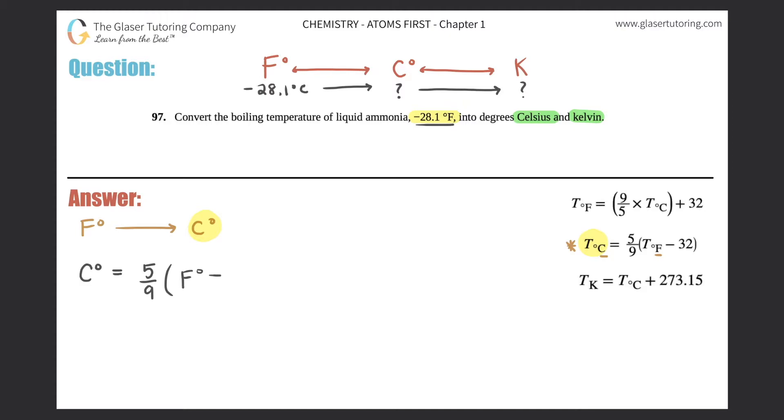Now remember your PEMDAS, right? Parentheses comes first, so you have to do this first, and then you will multiply by 5/9. That comes second. So Celsius = 5/9 × (our Fahrenheit, which was -28.1, minus 32). I'm going to do it in steps.